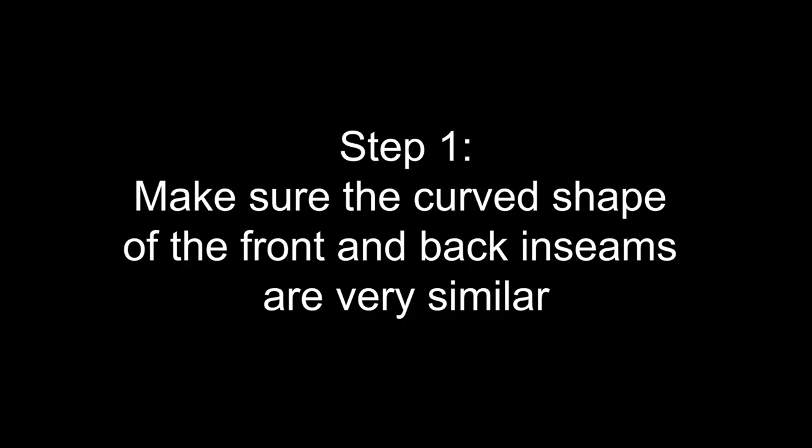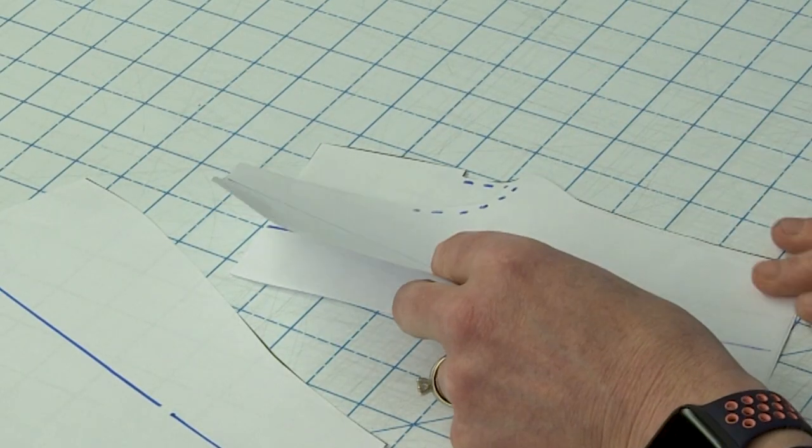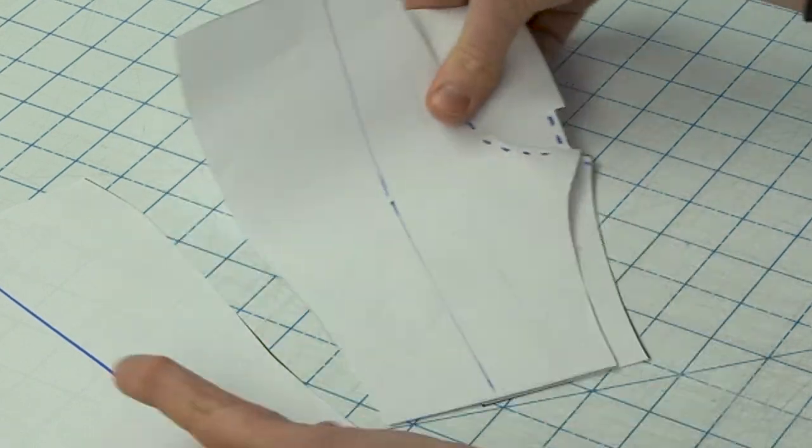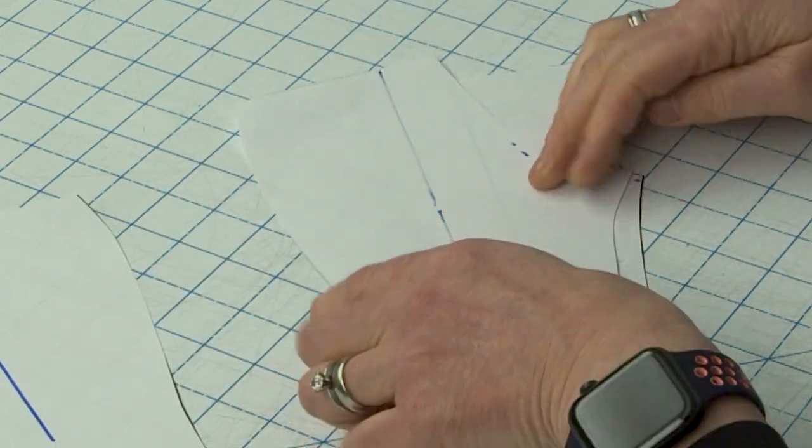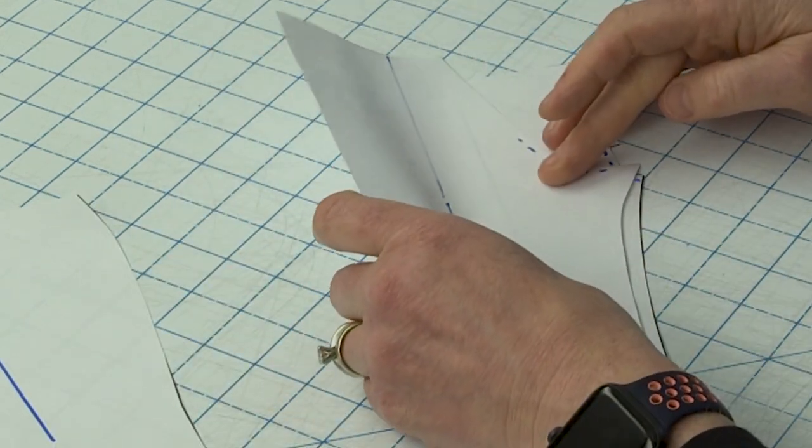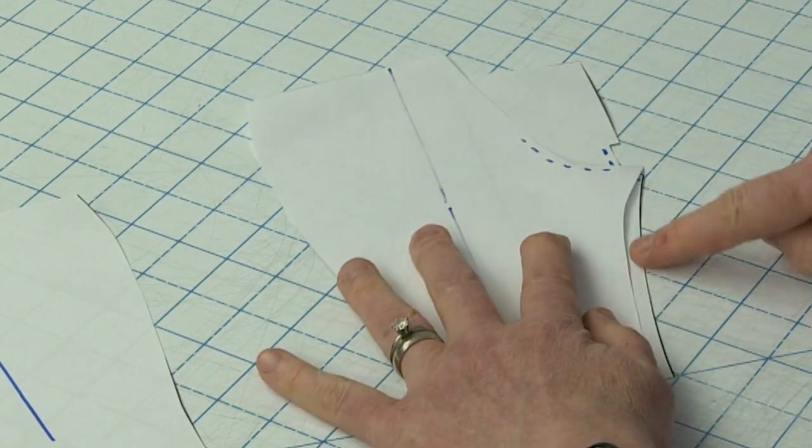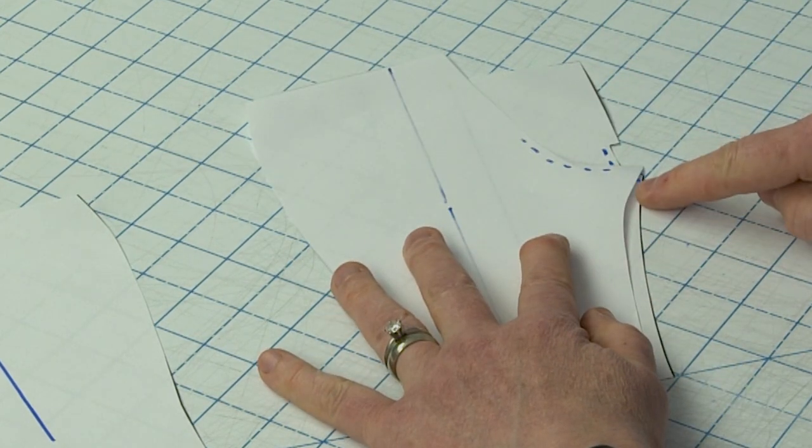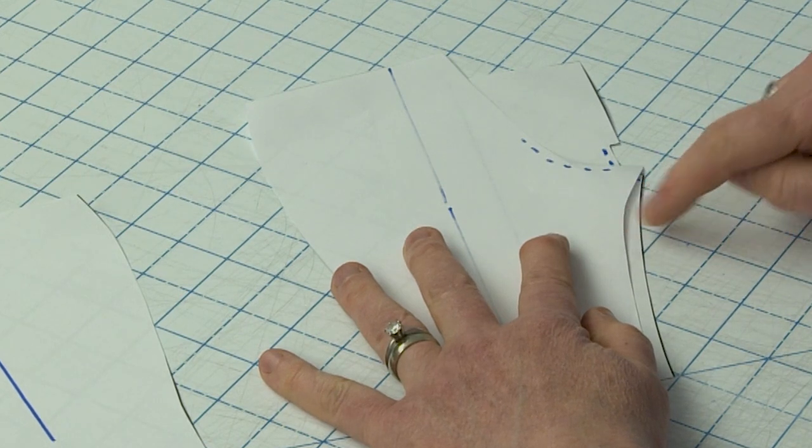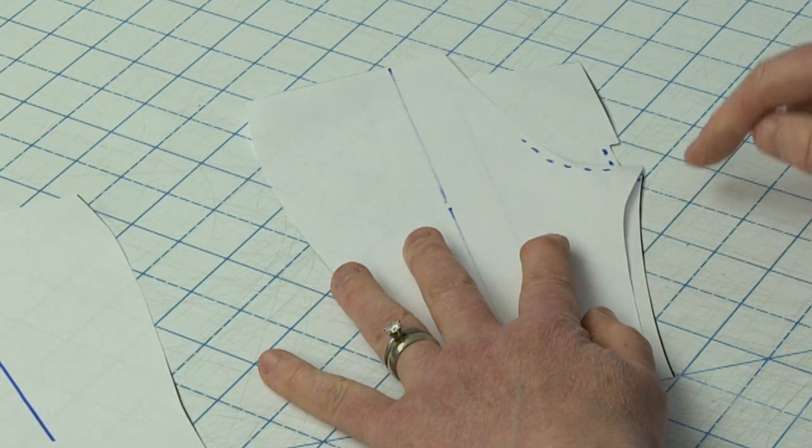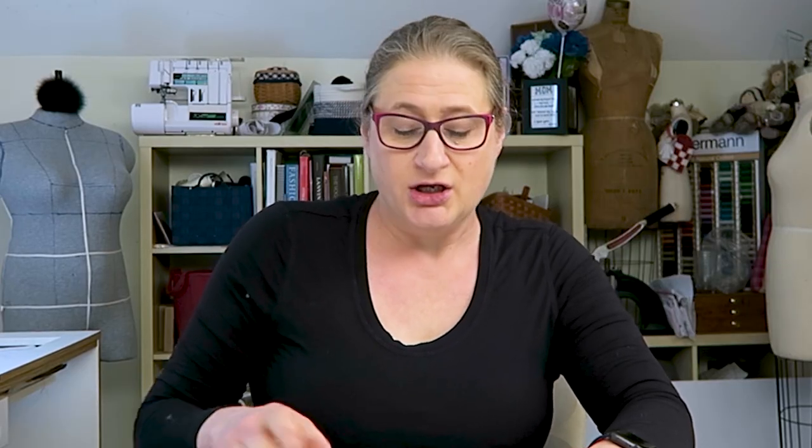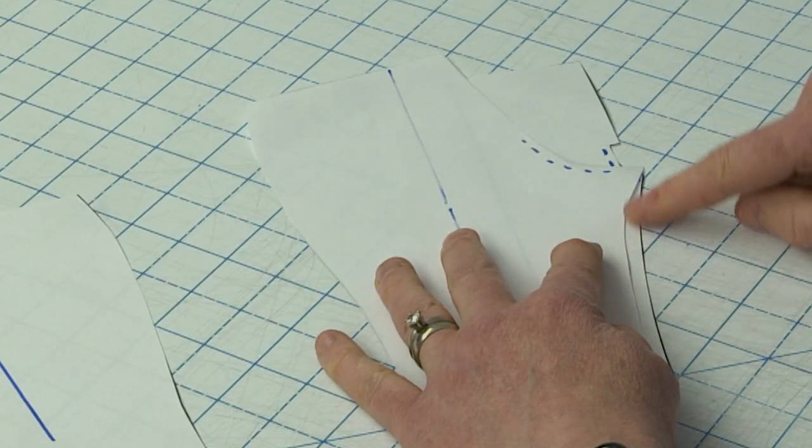The good news is this is really easy to fix. So if I put my front and back next to each other like this, you can see that the back has a much deeper curve there. So if that's the situation between your front and back inseams, before you shift your inseam to the back, you can actually blend that in a little bit.